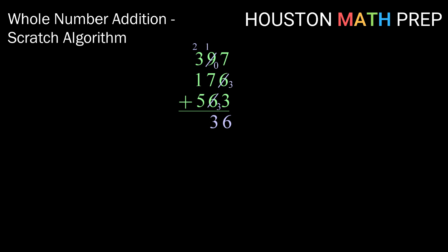Continuing here, I have 2 plus 3 is 5, plus 1 is 6, plus 5 is 11. So I can go ahead and make a scratch, write down my 1, bring it down, and then count up my number of scratches. So my total answer here is 1136.